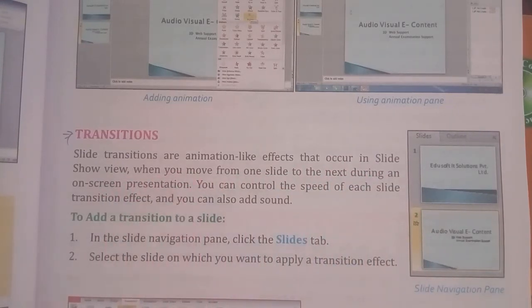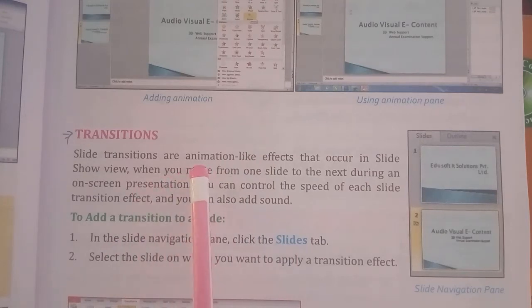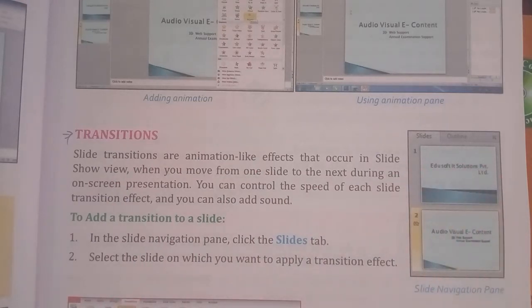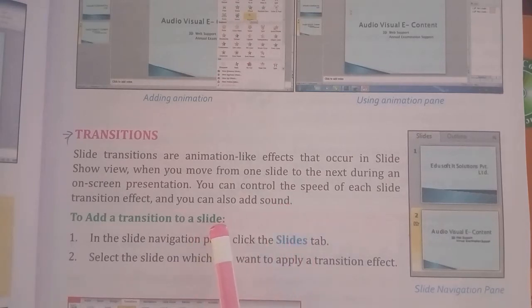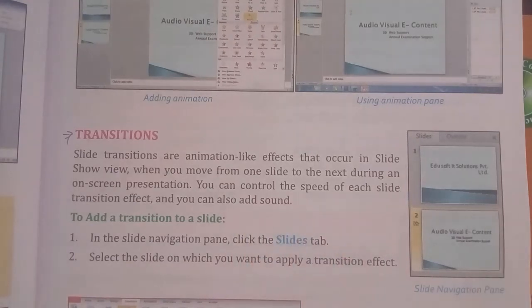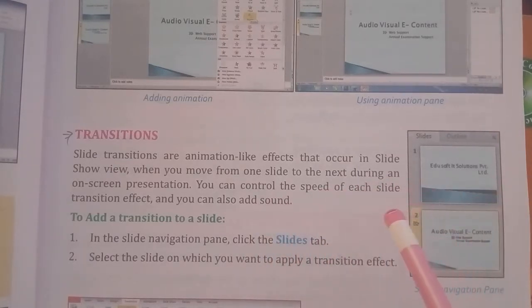Transitions are animation-like effects. A transition effect occurs in slide view when you move from one slide to the next slide, like a curtain effect, during on-screen presentations. You can control the speed of each slide transition effect, and you can also add sound to the transition options.